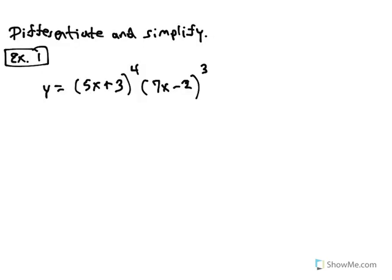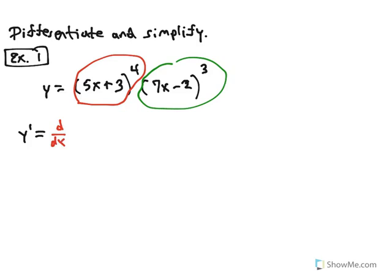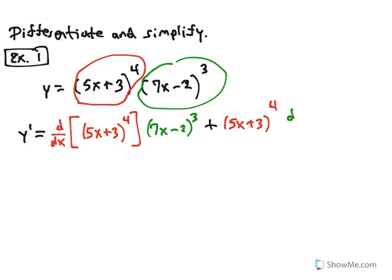Here's our first example, similar to numbers 9 through 12 from your homework tonight. Differentiate and simplify. What you see here is a product of two differentiable functions — this is our first function, and this is our second function. Using the product rule to find y prime, you find the derivative of the first function — the derivative with respect to x of (5x + 3)^4 — and multiply it by the second function. Then add to that the first function multiplied by the derivative of the second. This line is just setting up the work according to what the product rule tells us.